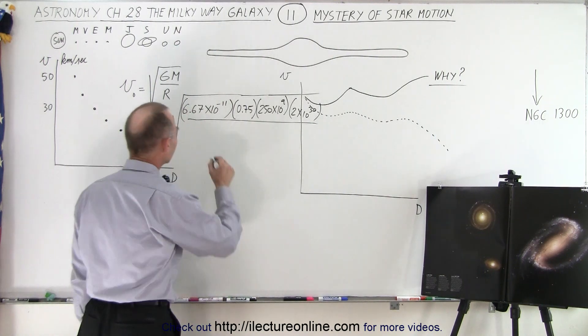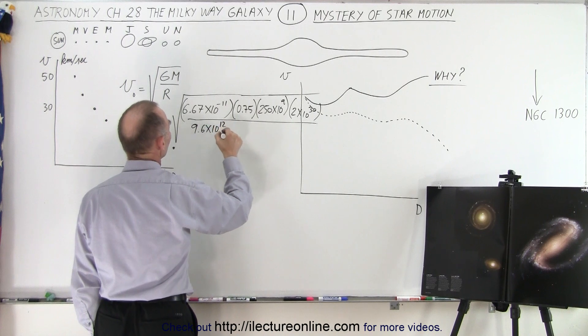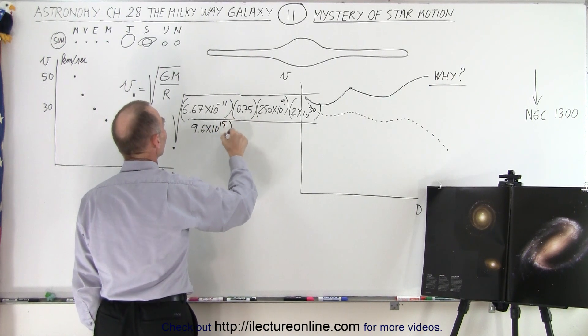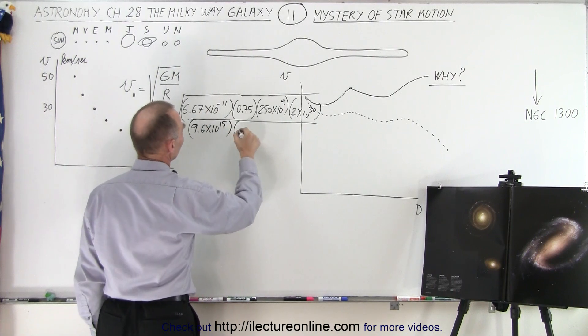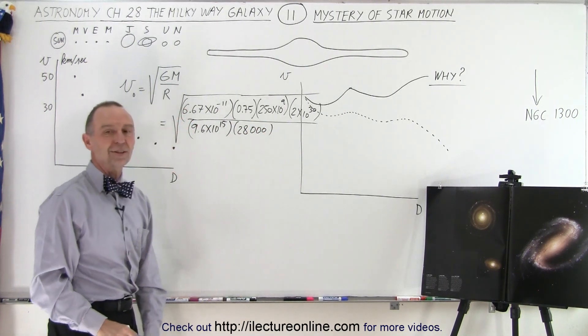And then we divide the whole thing by the radius. So a light year is about close to 9.6 trillion kilometers - 9.6 times 10 to the 12 kilometers - but we want meters, so it would be to the 15th. That's one light year. Then we have to multiply that times 28,000. So there, that would be the velocity of the sun.